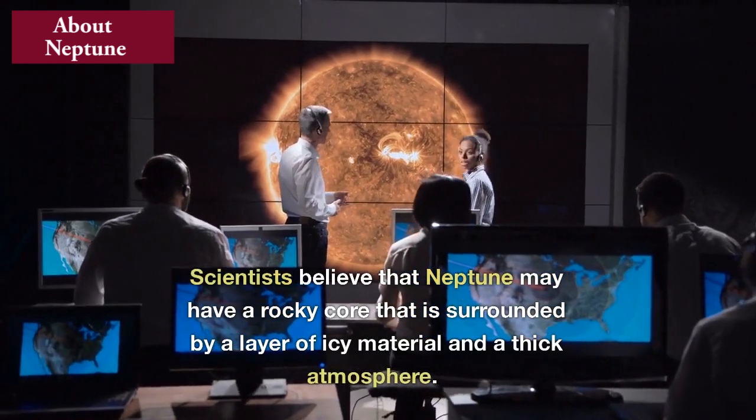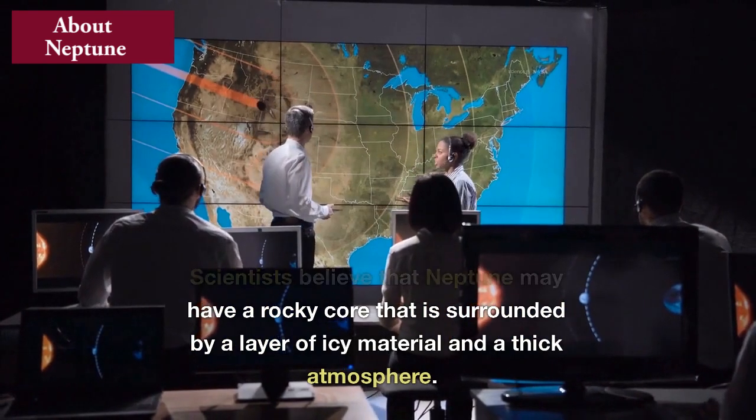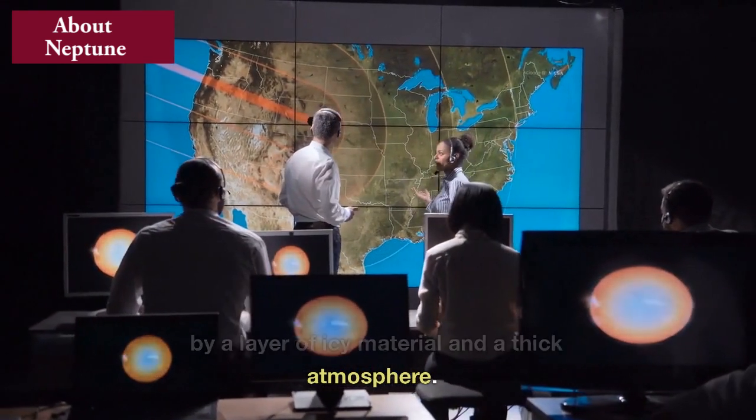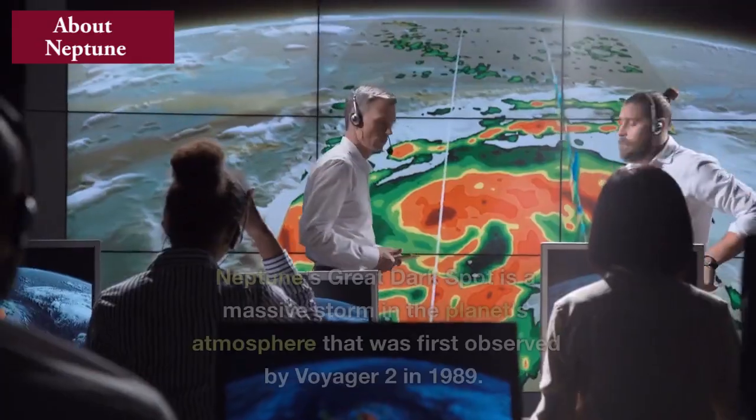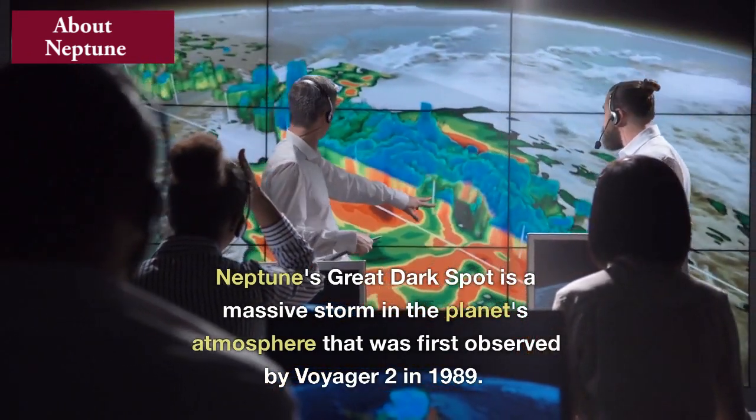Scientists believe that Neptune may have a rocky core that is surrounded by a layer of icy material and a thick atmosphere. Neptune's Great Dark Spot is a massive storm in the planet's atmosphere that was first observed by Voyager 2 in 1989.